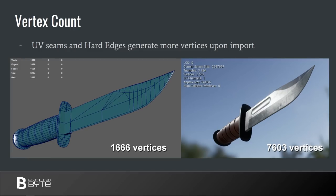The last step in optimizing memory consumption is hard edge and UV seams management policy. When you import a mesh into UE4, you will get a lot more vertices displayed in the static mesh editor statistics than in your 3D package. That's because UE4 splits edges of the mesh along UV seams and hard edges — an optimization for more effective real-time computations. As a general rule, you want most edges smooth and as few UV seams as possible. That way you will keep vertex count acceptable after import.